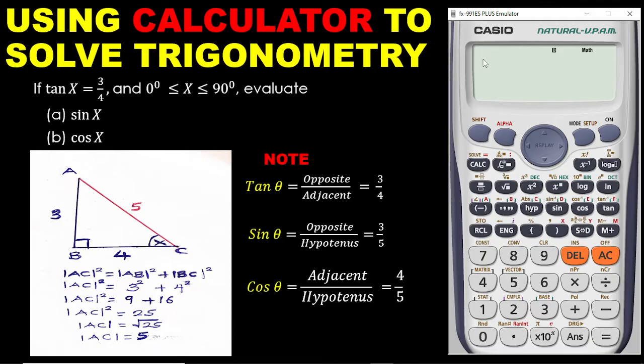And notice, this platform is intended to make mathematics easy for everyone, especially in the examination room. Okay, so let's go. If tan x is equal to 3 over 4 and x is from 0 to 90 degrees, evaluate (a) sin x and then (b) cos x.